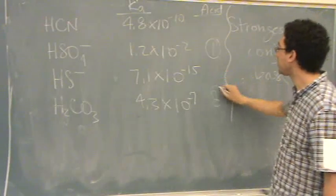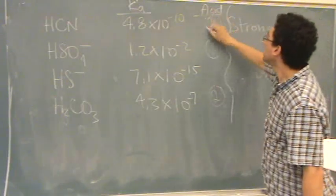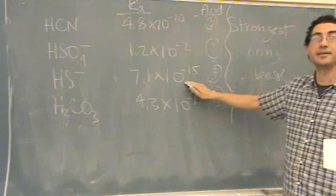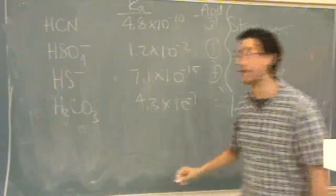Next one is four, right? This one. Then this one. And then this one. So, this is the weakest acid, so it'll be the strongest conjugate base.